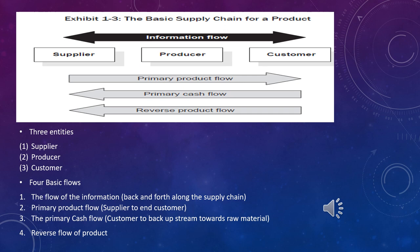There are basically four flows in the supply chain. First is the information flow, going along the supply chain from back to end and end towards the back. You can look at it broadly — information flows from the customer to the supplier and from the supplier to the customer.